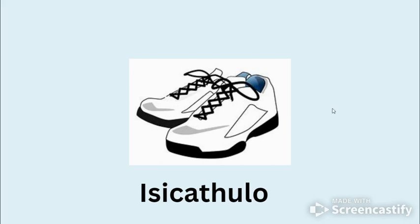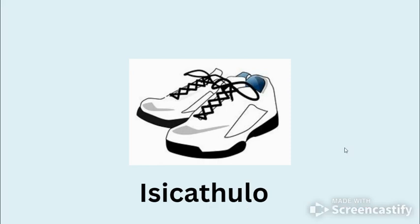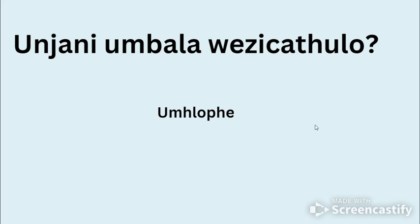Then we see shoes. In isiZulu a shoe is isikatulo, but if there are two or more we say ezikatulo — ezikatulo, so we have a Z there instead of an S. What color are these shoes? They are mostly white, so we are going to say they are white. Zimshope — the color white in isiZulu is mshope. Unjani umbala wezikatulo? Umshope — what color are the shoes? White, umshope, white.